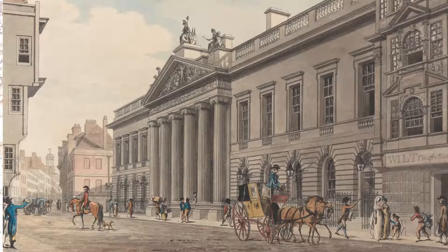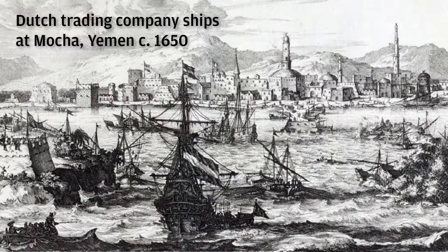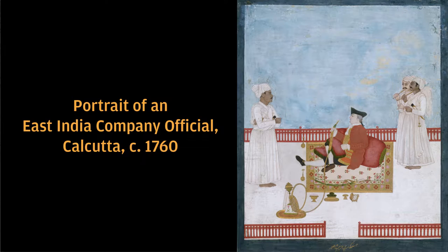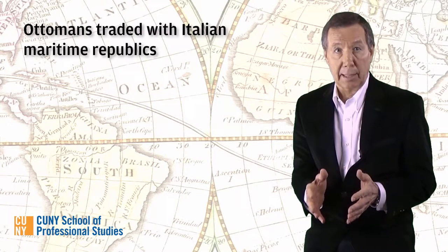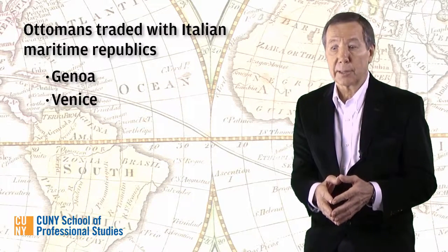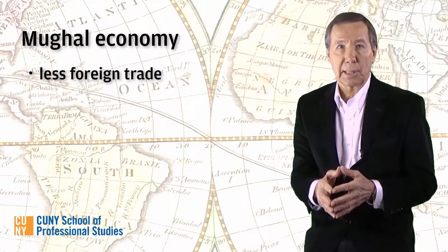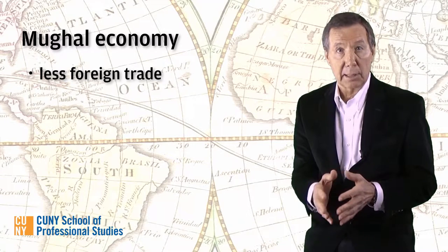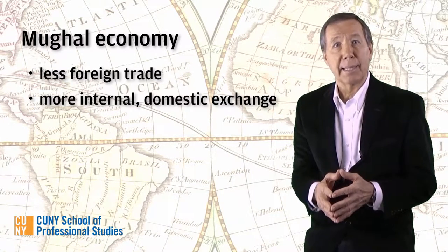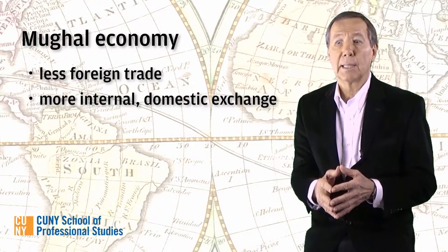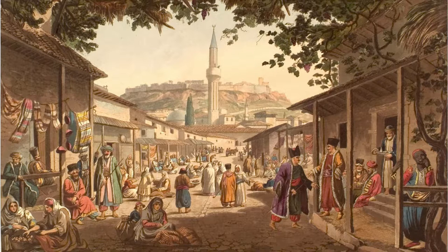The Islamic empires also developed exchange relationships with the most important English, French, and Dutch trading companies, which effectively monopolized commerce with these Eastern empires. There were also close economic relationships between the Ottomans and the Italian merchants operating in cities like Genoa and Venice, who were on the western end of the Eurasian trade routes. In the case of the Mughals, there is less reliance on foreign trade, primarily because it's a much larger land empire and internally has a much more coherent domestic market, making it possible for goods to be exchanged within the Mughal realm on a much larger scale.